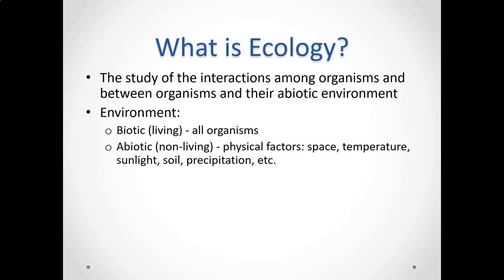In an environment, we can break things down into two categories: everything that's alive, and whatever is not alive but is still necessary for life. The non-living things are physical things in their environment that living things need — space, particular temperatures, sunlight, soil, precipitation, air to breathe. All of those things constitute their abiotic environment. So we call them biotic and abiotic.